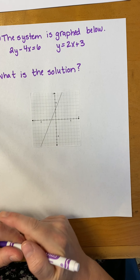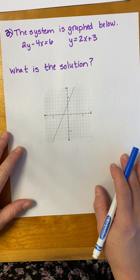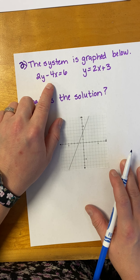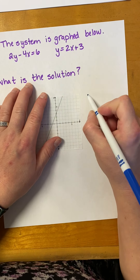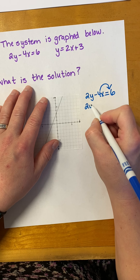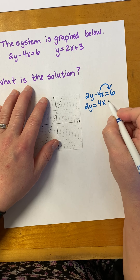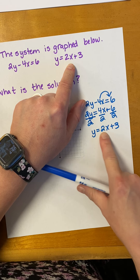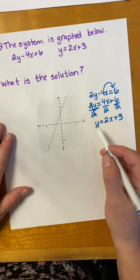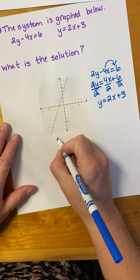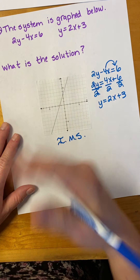For this one, it says the system is graphed below — what is the solution? I only see one line, so that means the lines must be on top of each other. To show they're the same line, we can get this equation in slope-intercept form. We have two y minus four x equals six. Kicking the x to the other side gives two y equals four x plus six, then dividing by two gives y equals two x plus three. They're the same line — this one was just written in a different form. So the solution to a system when it's the same line is infinitely many solutions, because they share every single point.